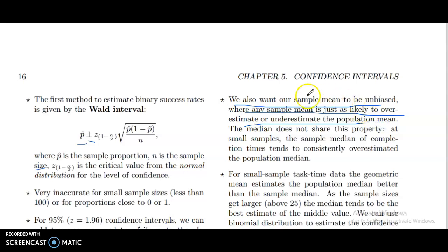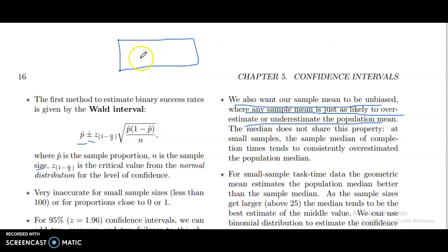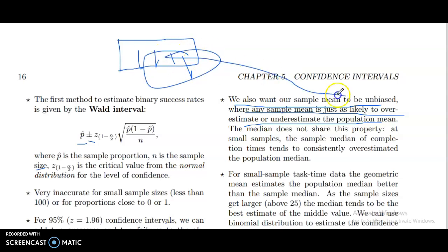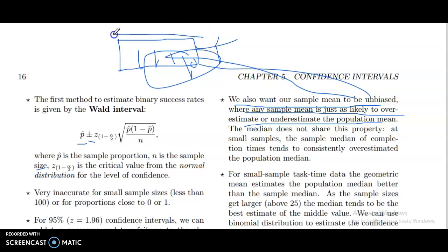We also want our sample mean to be unbiased, where any sample mean is just as likely to overestimate or underestimate the population median.